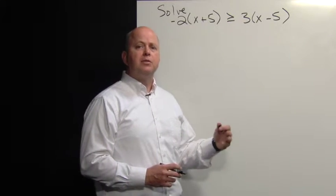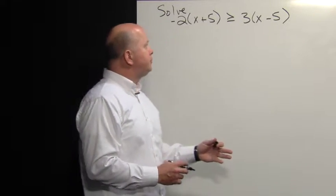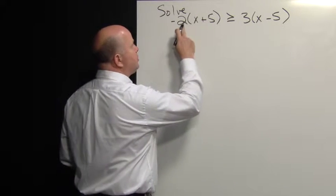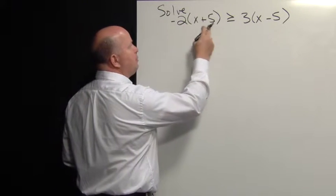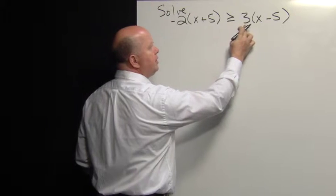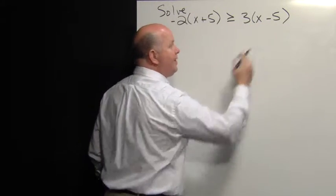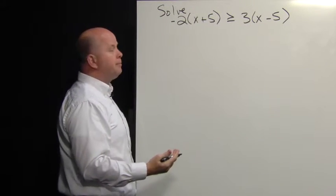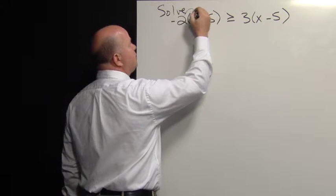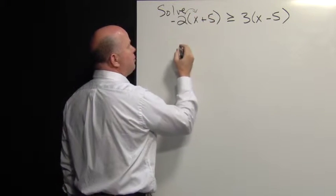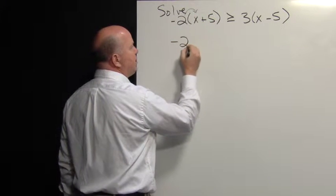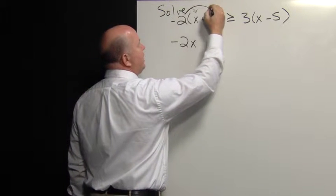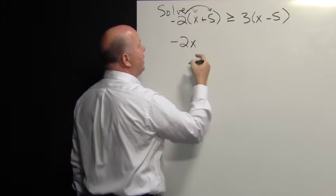This is an example of solving an inequality. We recognize that negative two is being multiplied by this whole quantity, and three is being multiplied by that whole quantity, so we have to use the distributive property. Negative two will be distributed as a product — two times negative two times X, which is negative two X.